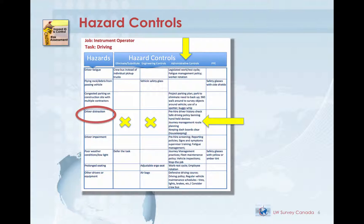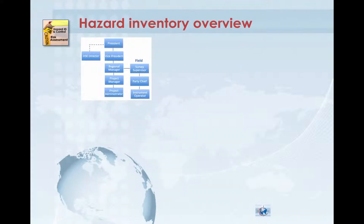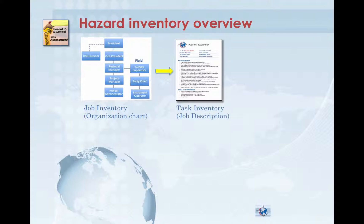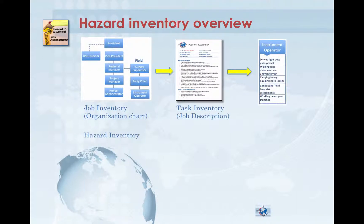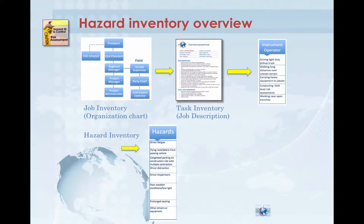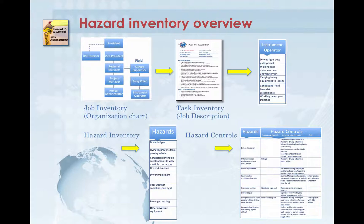We repeat this process, looking at each hazard on the list, identifying control methods, and then we use a risk management process to rate the probability that an event will occur. This allows us to focus our time and resources on the risks most likely to affect our team members. To summarize the process: first, we build a job inventory using our organizational chart. Next, we write job descriptions that accurately describe the tasks our team members will perform. Our task inventory comes from the job descriptions. We look at the tasks the person will perform and build a hazard inventory of the known or expected hazards. Then we build a hazard control inventory listing the methods chosen to either eliminate or reduce the risk. The next step is to prioritize or rank the risks.